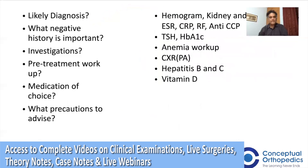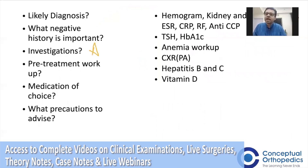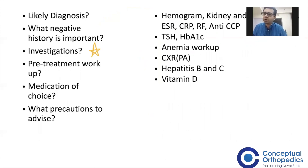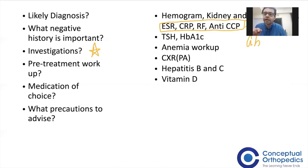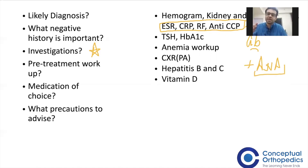Moving to investigations: hemogram, kidney and liver function tests, and inflammatory markers are mandatory. Rheumatoid factor and anti-CCP — the antibodies associated with rheumatoid arthritis — should be included. Anti-nuclear antibody should also be included, because as discussed, many extra-articular features can be present, so if you are suspecting lupus you must do an ANA. All these patients must also be evaluated for hypothyroidism with a TSH.